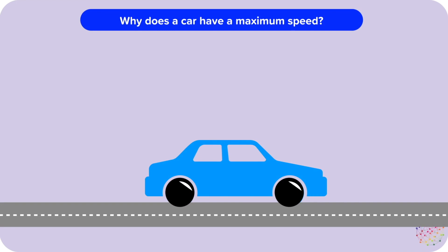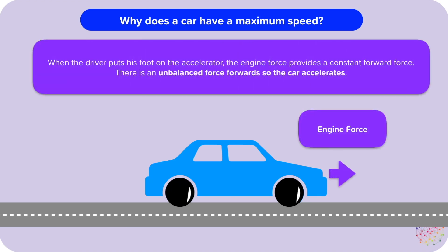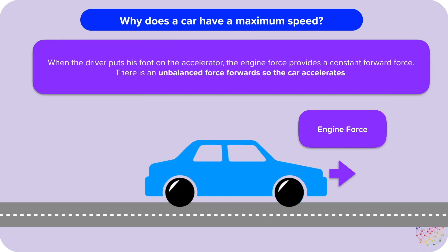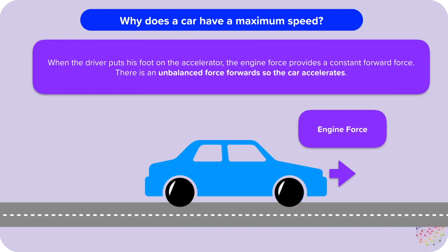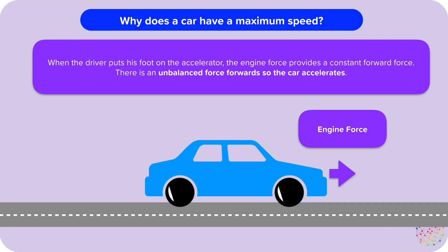So let's think about why a car has a maximum speed. When we push down on the accelerator pedal, there's a force from the engine, and that should accelerate the car. But why can't it get faster and faster forever? When the driver puts his foot on the accelerator, the engine force provides a constant forward force — there's an unbalanced or resultant force forwards, so the car accelerates.